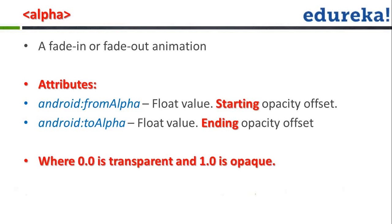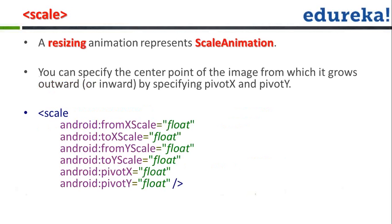Regarding scale animation — opaque means something you cannot see through. Think of it this way: a transparent glass you can see through to the other side. But if you put a black rough paper on that glass and ask someone to see through it, they can't — because the object has become opaque. Transparent, translucent, and opaque represent different levels of visibility, with opaque being completely non-see-through.